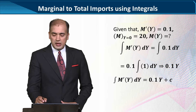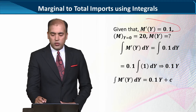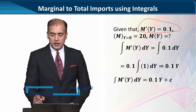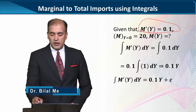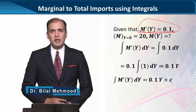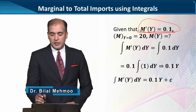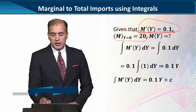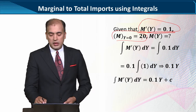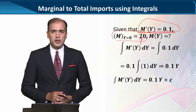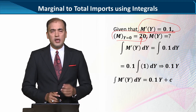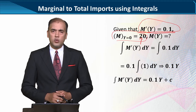If we are given a marginal imports function — given here in numerical form — we have this numerical form of the imports function. We are also told that if the national income is zero, the imports are 20. So this is the initial condition: when national income is zero, we will be doing 20 units of imports.